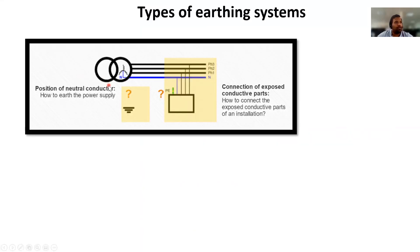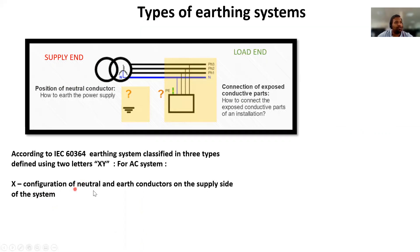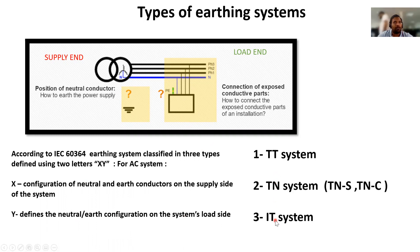Types of earthing systems: Looking at a typical diagram with a supply transformer on one side and load-side equipment on the other, according to IEC 60364, earthing systems are classified based on how the supply-side neutral and earth conductors are configured, as well as how the load-side neutral is arranged. There are three types: TT system, TN system, and IT system.